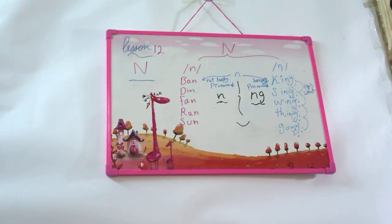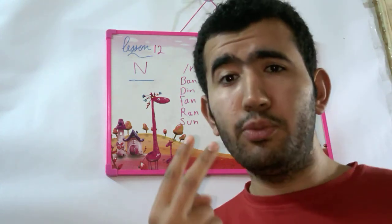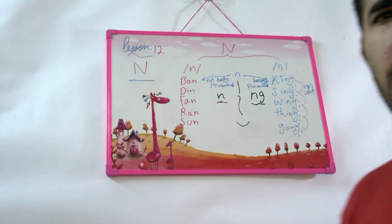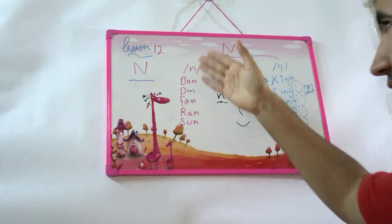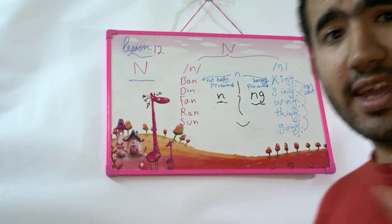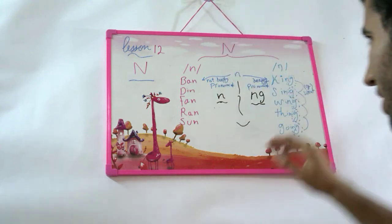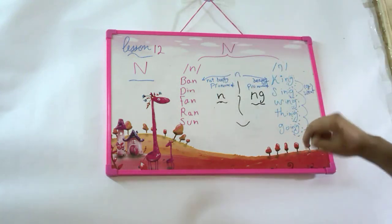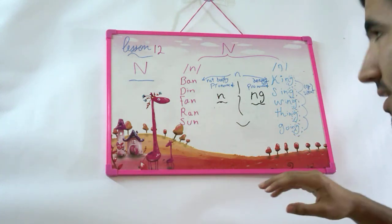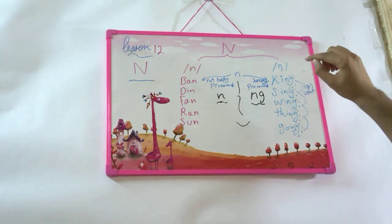What we have learned today, we have learned that the N has two pronunciations, not just one. The first one is simply when it does not follow by G. Like these words: fan, din, fan, ran, son. The second pronunciation of N, when it's followed by G. There is G after the N. So we remove the G. We don't say it. It's silent. And we stress the N. So we say king.